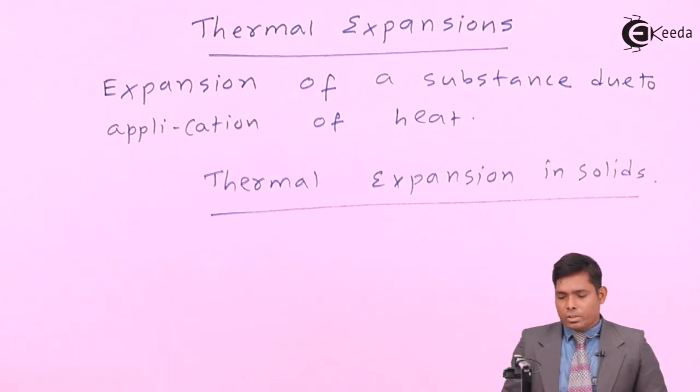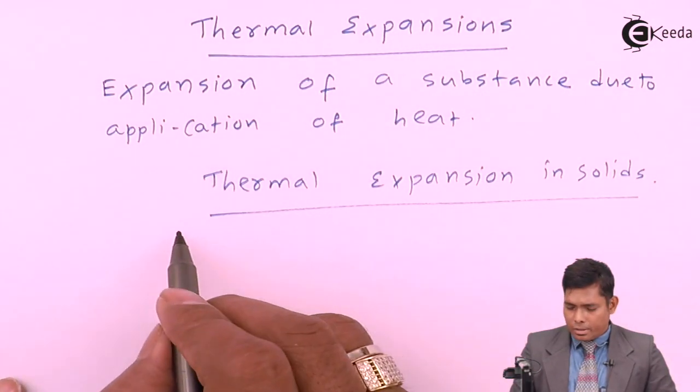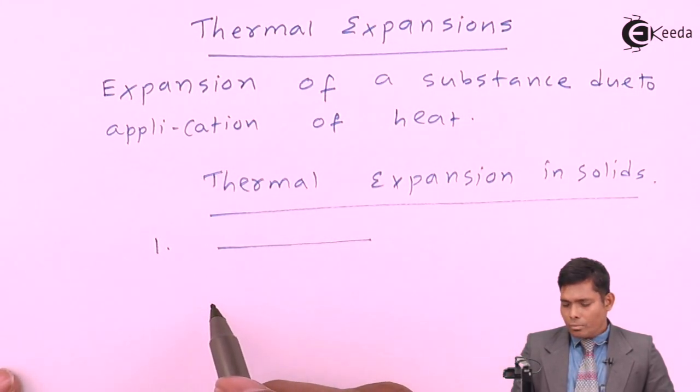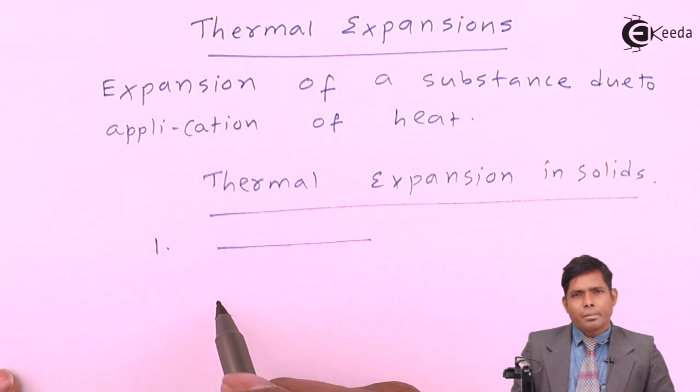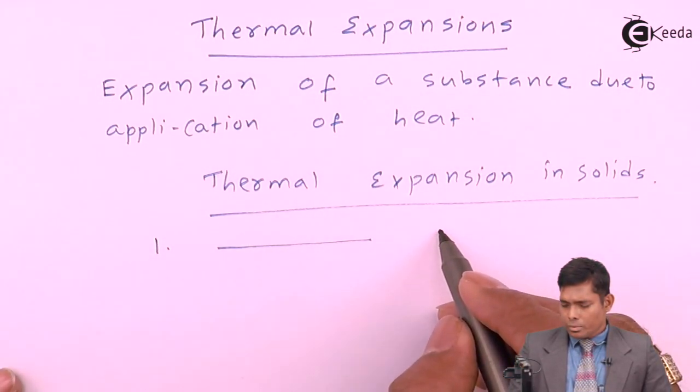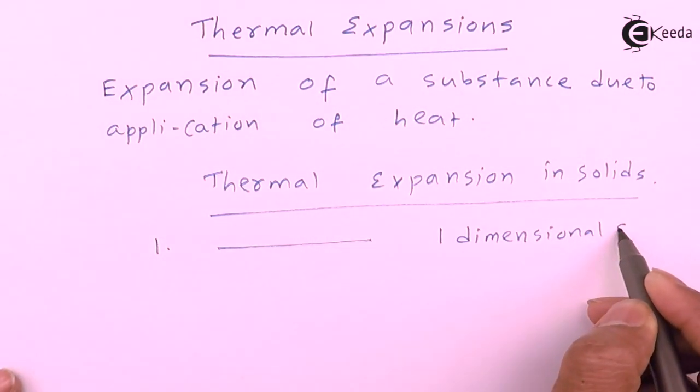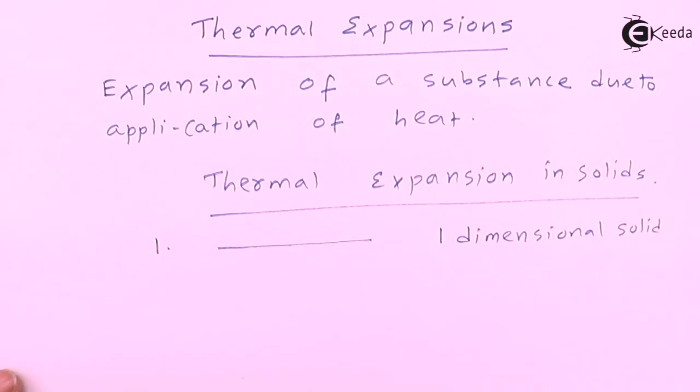Thermal expansion in solids. Solids, there are three types of solids, there are three types of thermal expansions. One is, you have a solid like this, which is a one dimensional solid, like a rod, a metal rod,